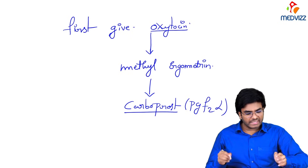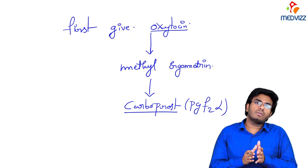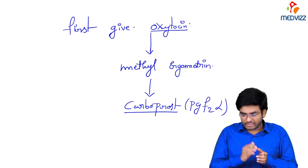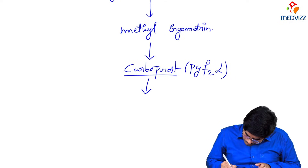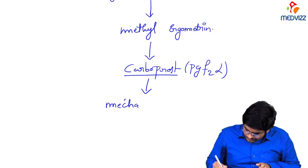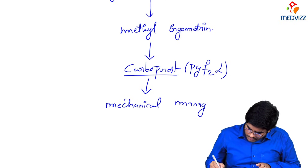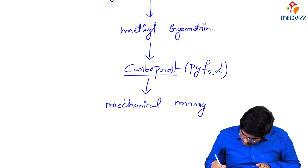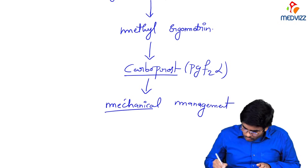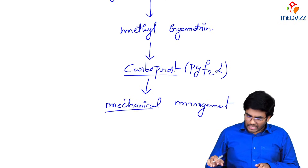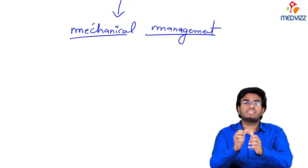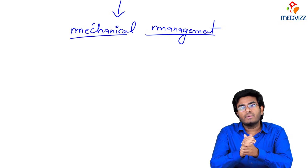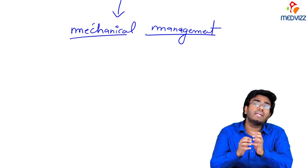If bleeding is still not controlled with medical management, stop medical management and go for mechanical management. Under mechanical management, we are not giving any drugs — we try to decrease bleeding by doing certain mechanical procedures.